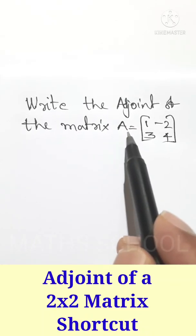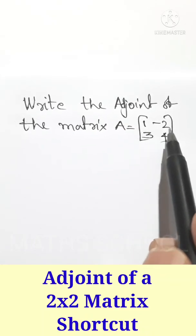Write the adjoint of the matrix A equal to 2 by 2 matrix 1, negative 2, 3, 4.